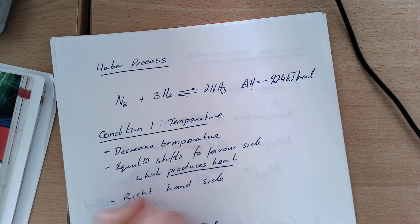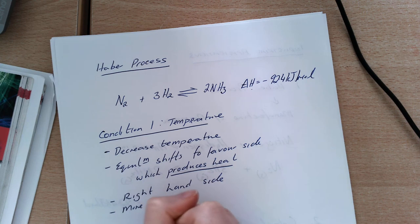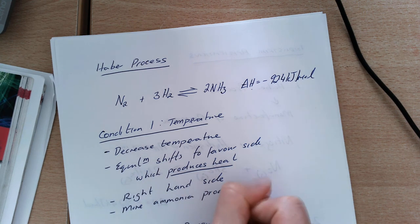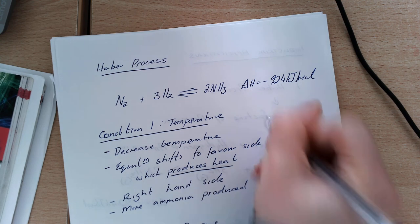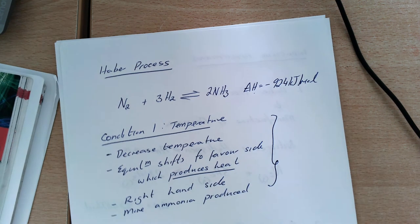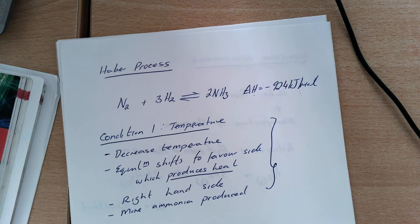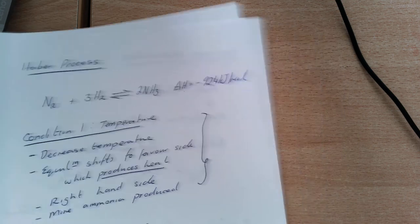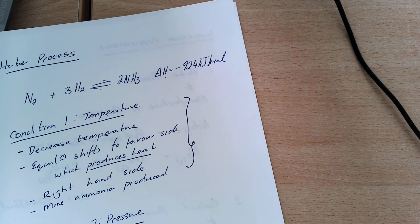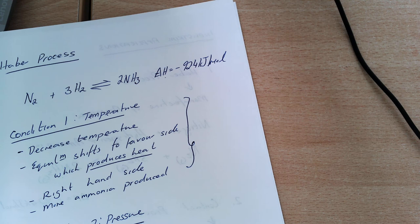If I have the right-hand side, that means more ammonia is produced, which is what I want. But as I said, there is a problem with this. The problem is that we already know from looking at rates of reaction that temperature and rate are directly affected. If I increase my temperature, I increase my rate. But if I decrease my temperature, I'm obviously going to decrease my rate.